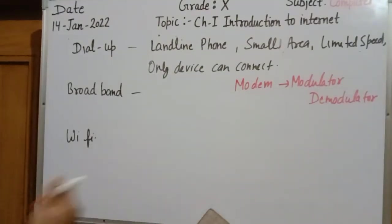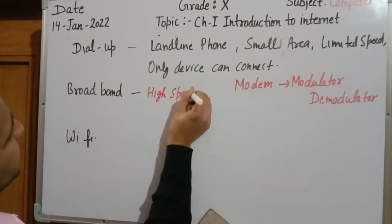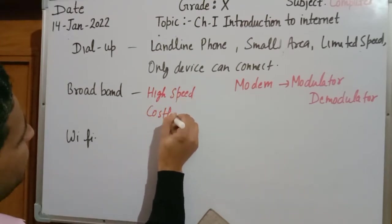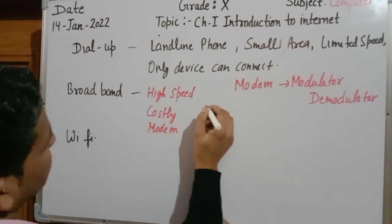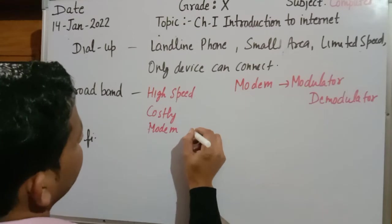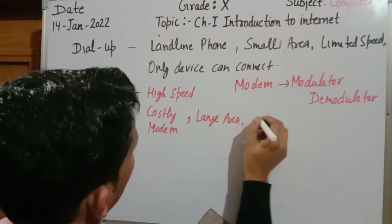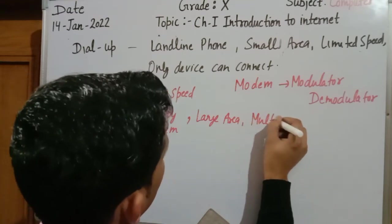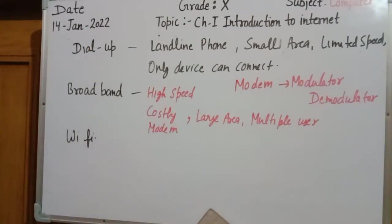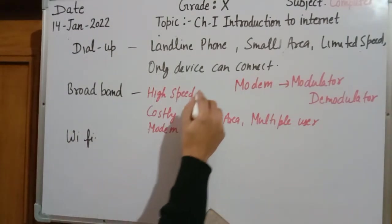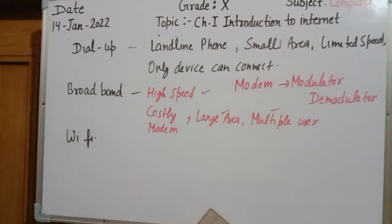The next connection is broadband. Broadband is a high-speed connection. It is a costly system and also requires a modem. However, it can cover a large area and multiple users can share the same connection. Broadband is costly but it is a high-speed, large-area covering connection where multiple users can share the same connection at the same time.